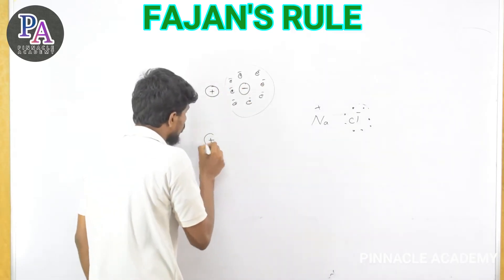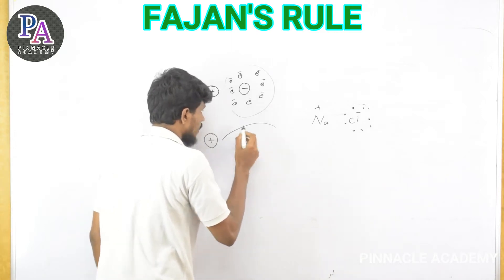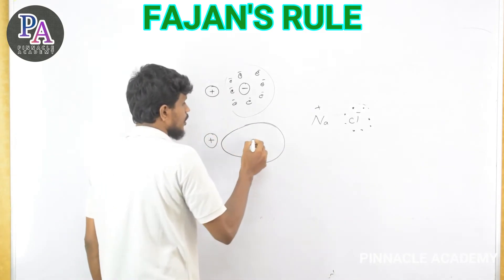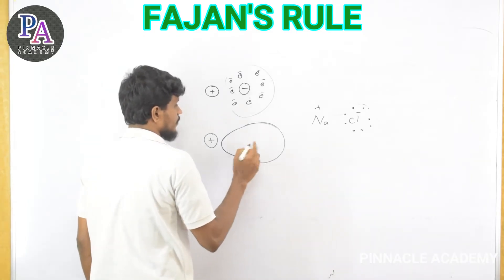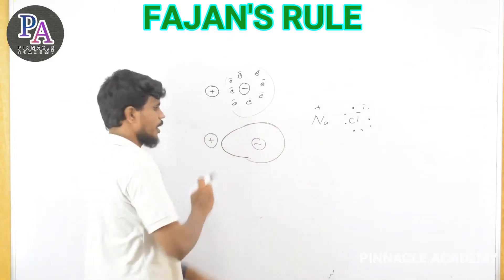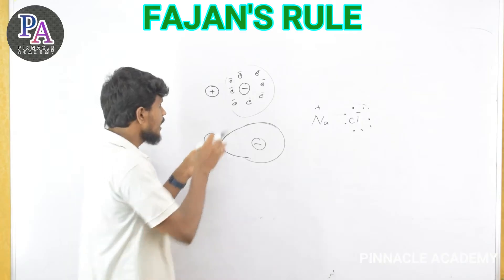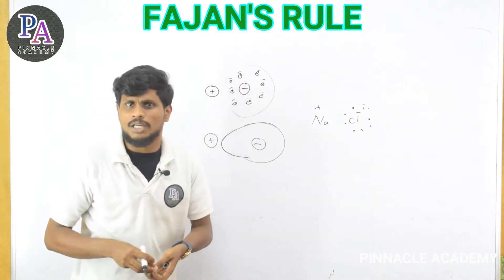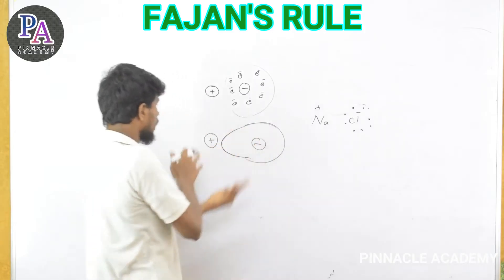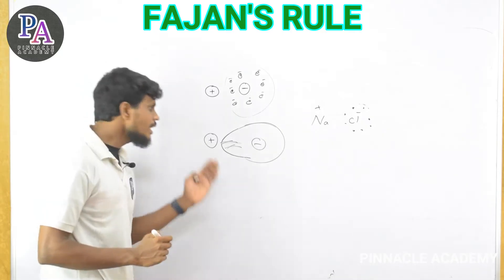The positive charge in the cation pulls the electron cloud of the anion. The negative ion's electron cloud gets distorted toward the cation. When electrons are being pulled and shared in this way, the bond takes on covalent character — the electrons are effectively being shared rather than fully transferred.